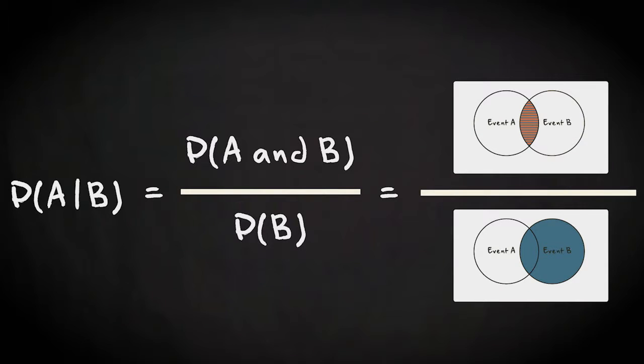It can also be illustrated with this Venn diagram, which emphasizes that the joint probability of A and B can only be smaller than or equal to the probability of B.